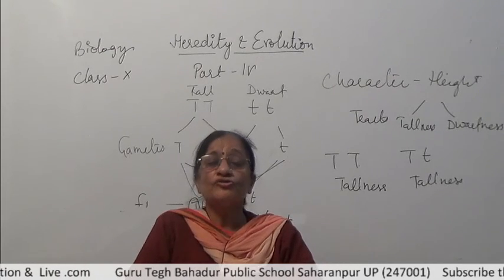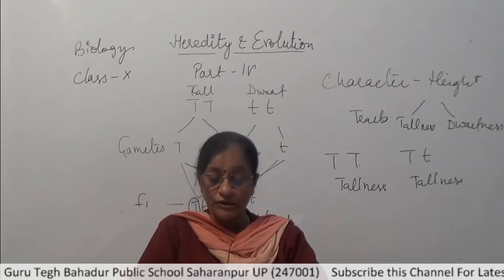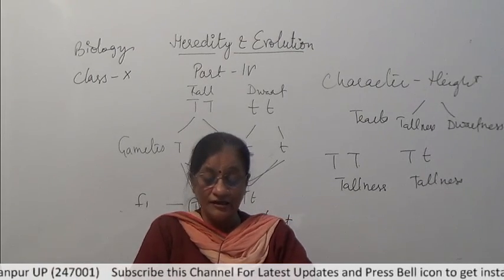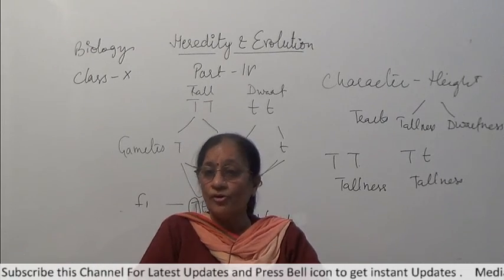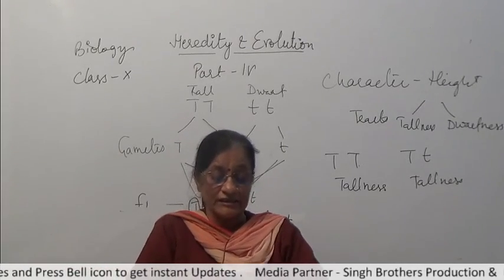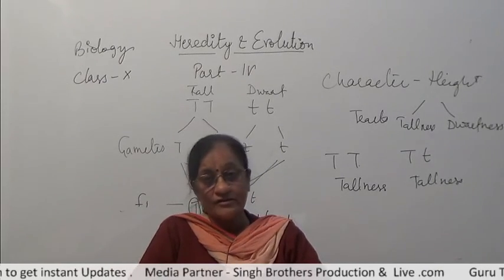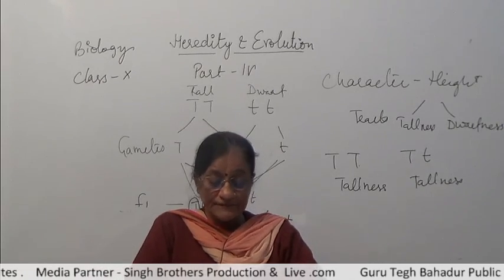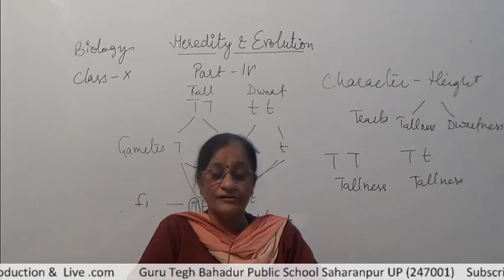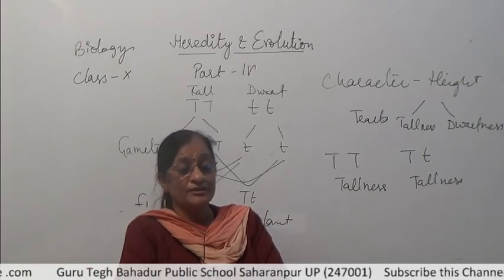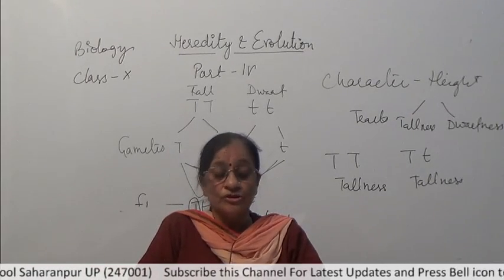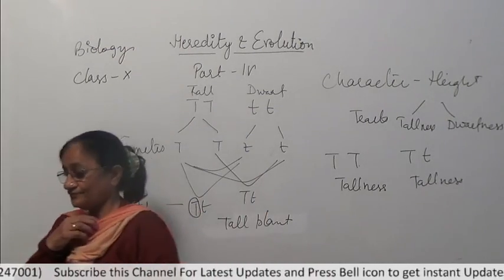From these results, Mendel formulated the principle of independent assortment, which states that the inheritance of two or more pairs of contrasting traits occurs in such a way that one pair of contrasting traits is independent of the other pair. In other words, the round or wrinkled trait and the yellow and green trait are independently inherited. These are the principles given by Mendel. That's all for today, thank you.